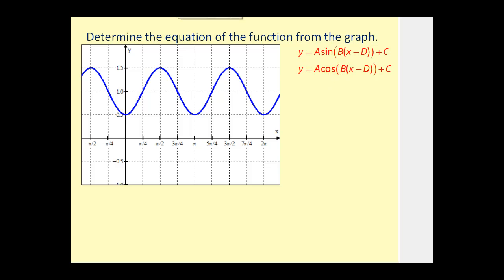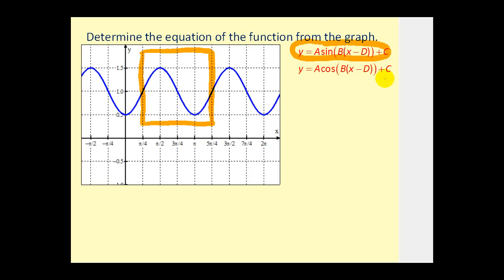The way we're going to do this is first pick a piece of the graph and highlight one period of it. For this graph, I'm going to isolate this piece, and you can see right away it resembles the graph of sine theta, so we're going to use this form to find the equation of this graph.